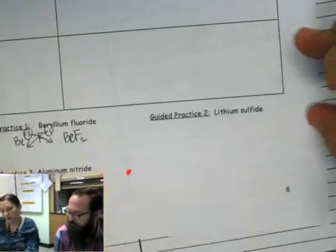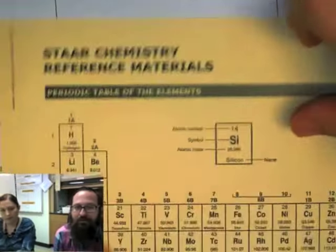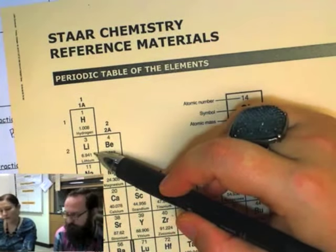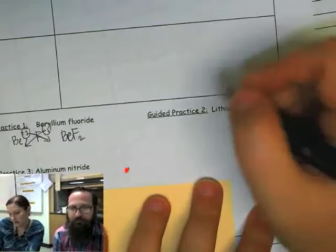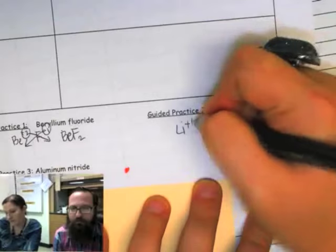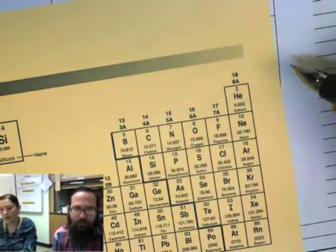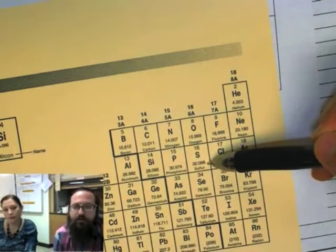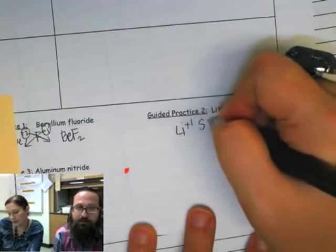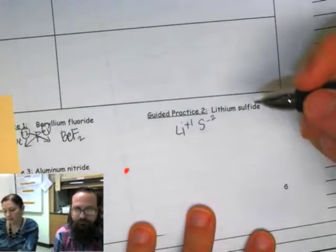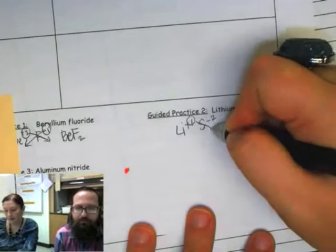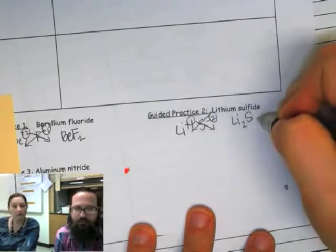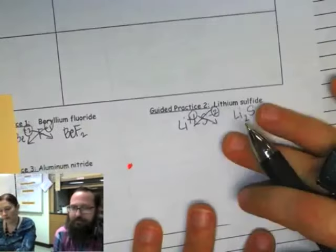Lithium sulfide. Lithium, I see Li right over here. First column, so plus one. I'm going to write that down. Sulfide. Sulfur - you take the ID off. Sulfur is minus two in the second column. So now I drop and swap, and I criss cross. I would get Li2S1, but I don't write that one. Perfect. Let's do one more.